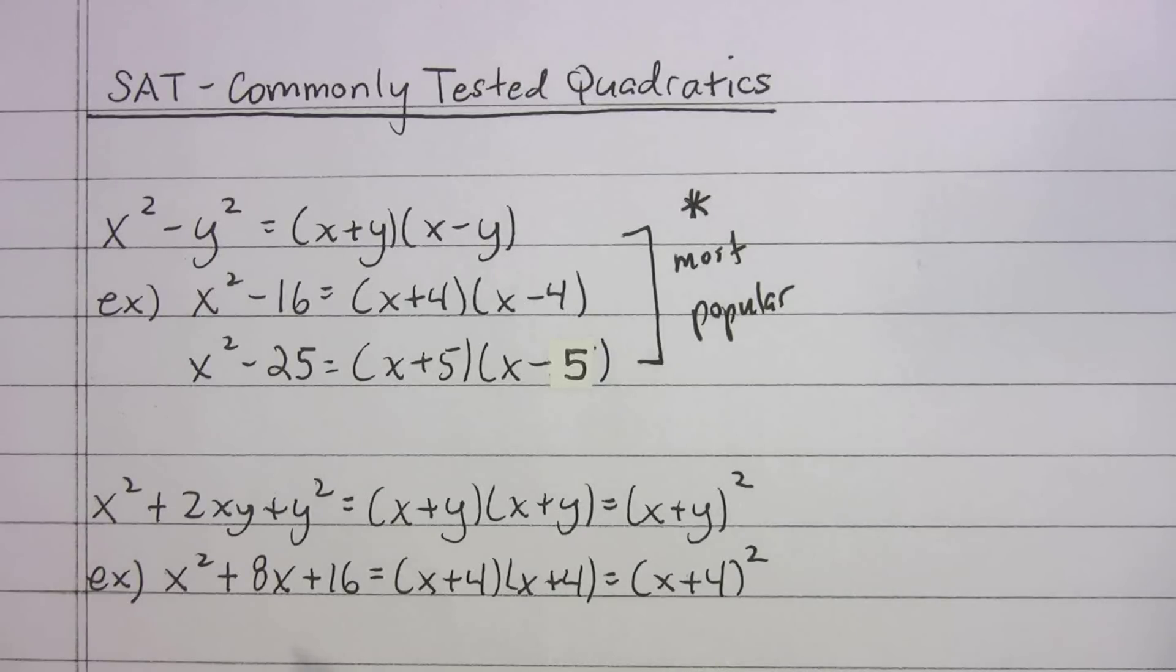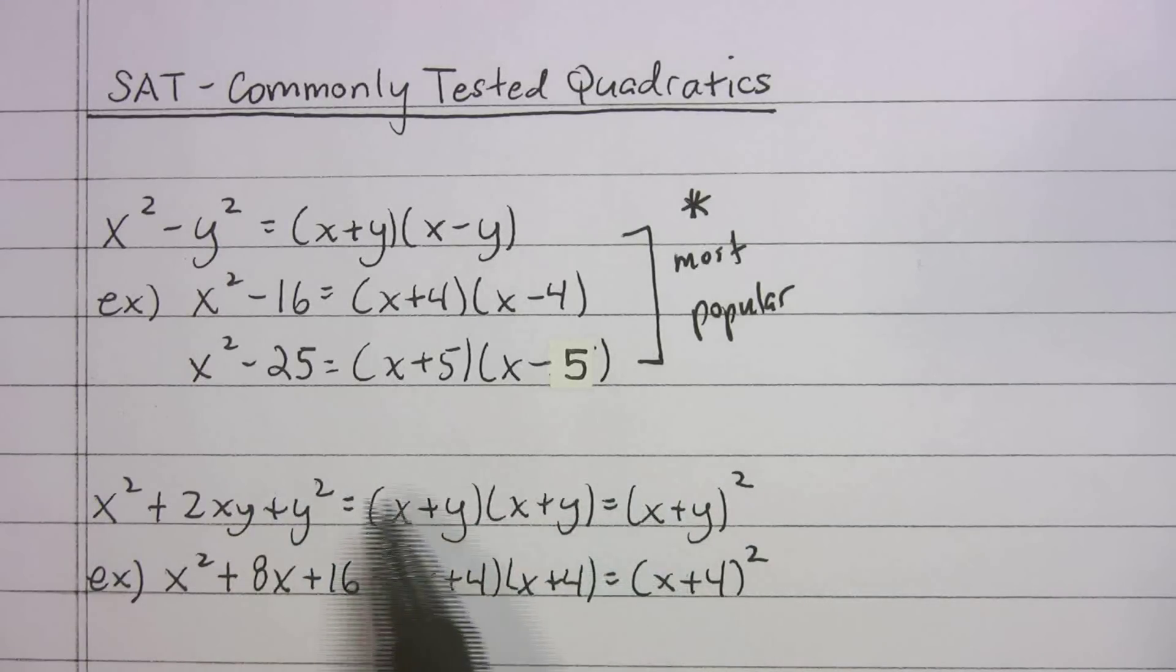The second one I want to go over is x squared plus 2xy plus y squared. Kind of looks like just a mess there, but that really is x plus y times x plus y, which is the same thing as x plus y squared. Getting the tougher questions right is going to require you to recognize that this is the same thing as that. They're all the same thing.